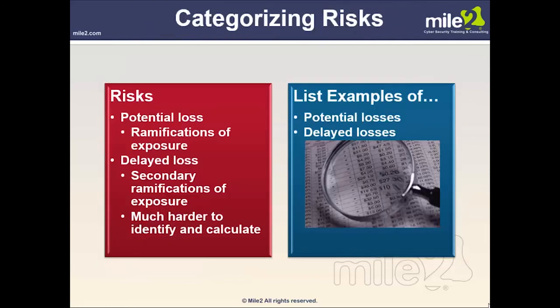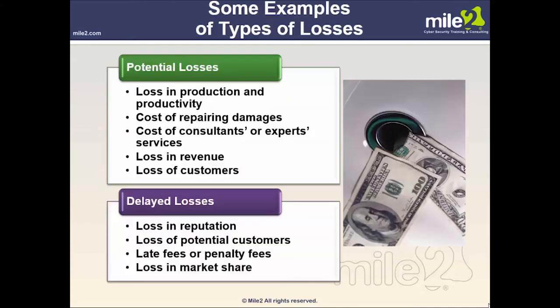When categorizing risks: risk is the potential loss — the ramifications of exposure. Delayed loss is a secondary ramification that is much harder to identify and calculate. Examples of potential losses include loss in production and productivity, cost of consultants or expert services, and loss in revenue or customers. Delayed losses include loss in reputation, loss of potential customers, late fees or penalty fees, and loss in market share.